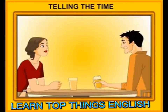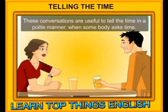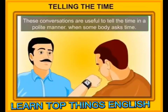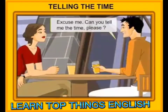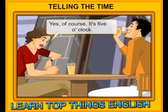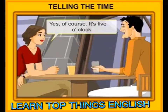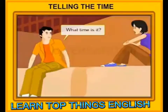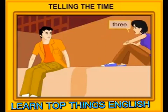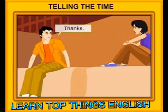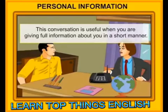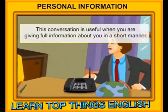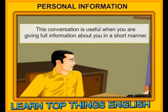Telling the time. These conversations are useful to tell the time in a polite manner. Conversation 1: Excuse me. Can you tell me the time, please? Yes, of course. It's 5 o'clock. Thank you. No problem. Conversation 2: What time is it? 3. Thanks.